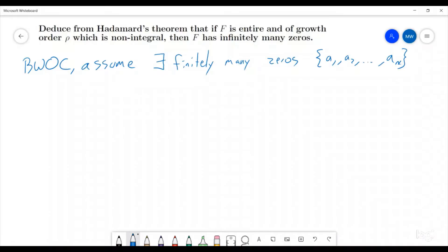Without loss of generality, we can assume that none of them are zero, so we have a bunch of non-zero zeros, which sounds great to say. So then what we can say is, by Hadamard's Theorem...